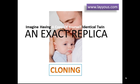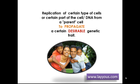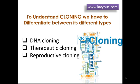What is cloning, generally speaking? It is done by replicating a certain type of cells or a certain part of the cell's DNA from a parent cell, to propagate a certain desirable genetic trait. To understand this subject, we have to differentiate between its three different types.